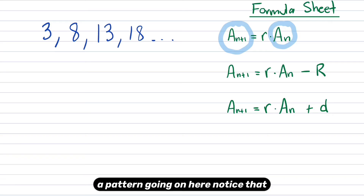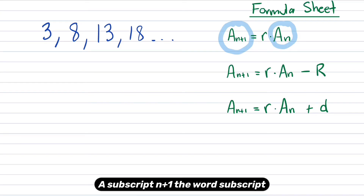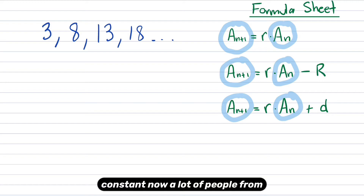Notice there's a pattern going on here. On the left-hand side, for all of these equations, there's a subscript n plus one. The word subscript just means a smaller text next to the letter. That's the same for each of those formulas — it's constant.